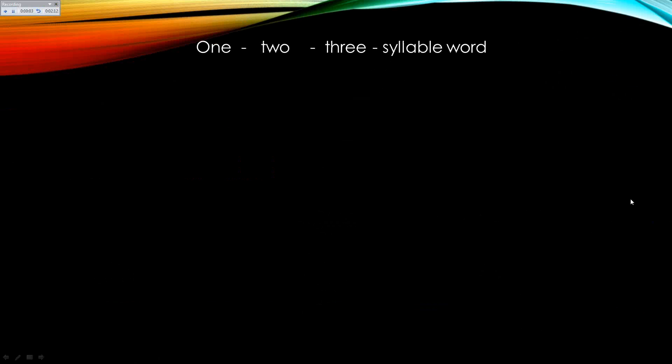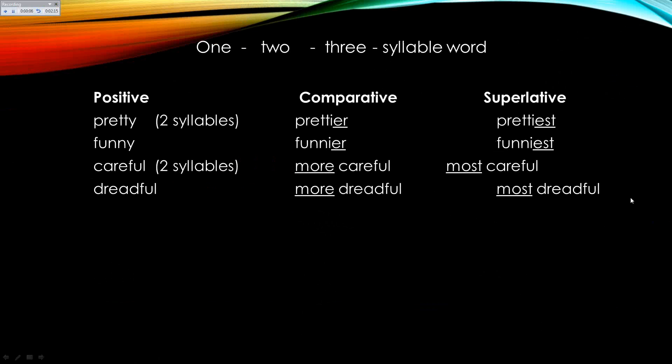However, there is a difference, and it depends on how many syllables the word has. If the word has two syllables, most of the time we add ER and EST — like pretty, prettier, and prettiest; funny, funnier, and funniest.